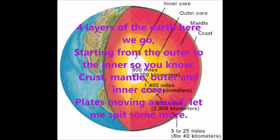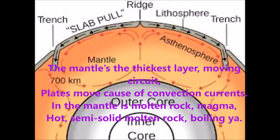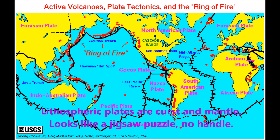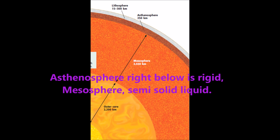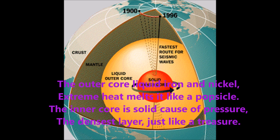The mantle's the thickest layer, moving circuit. Plates move because of convection currents in the mantle — it's molten rock, magma, hot semi-solid. Lithospheric plates are like a jigsaw puzzle. The asthenosphere right below is rigid; mesosphere is semi-solid liquid.